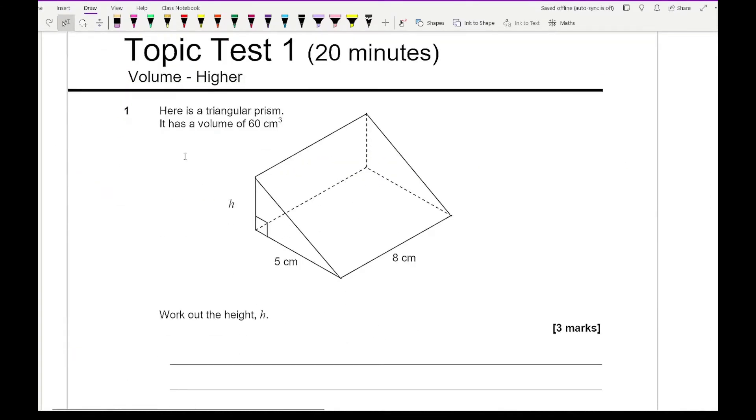Looking at question 1, it says here is a triangular prism. It has a volume of 60 cm cubed and we want to work out the height. As always with these reverse type questions, start off by writing the formula. So the volume of the triangular prism equals the cross-sectional area, which is a triangle, multiplied by the length. In terms of substituting the numbers in, we've got V equals B times H divided by 2 times L, which gives us V equals BHL over 2.